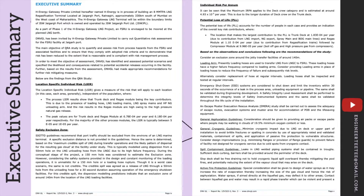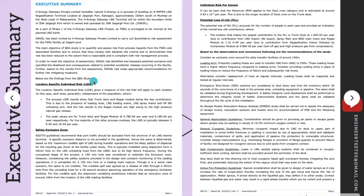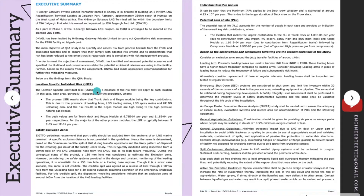Here is an example of an executive summary from a quantitative risk assessment report that I found online. At the beginning there's a good introduction about what the project is about, where it's been built, and why this quantitative risk assessment was carried out. The objective is written there and the findings from the QRA study are also identified. I particularly like the use of headings — so if you're looking for information about LSIR, you know where to find it, or you can quickly jump to safety exclusion zones.